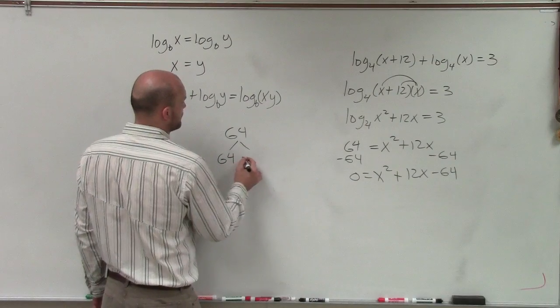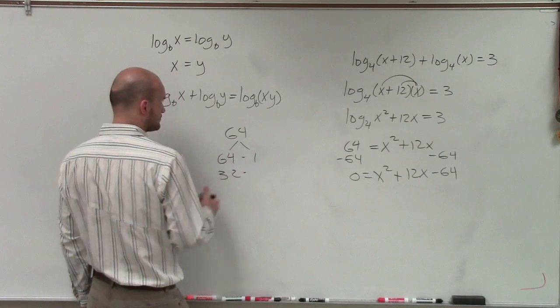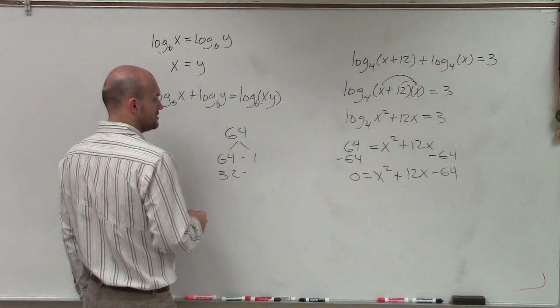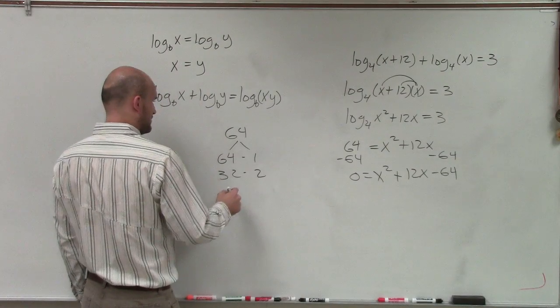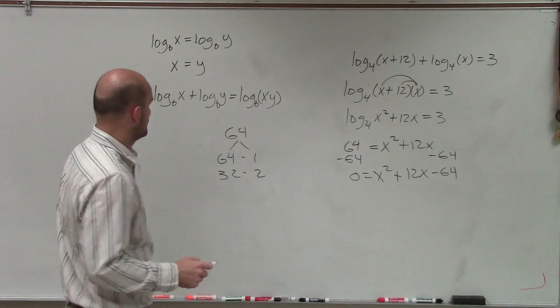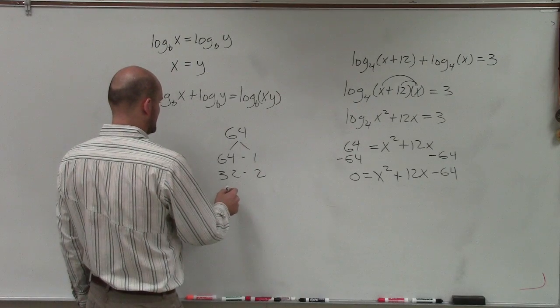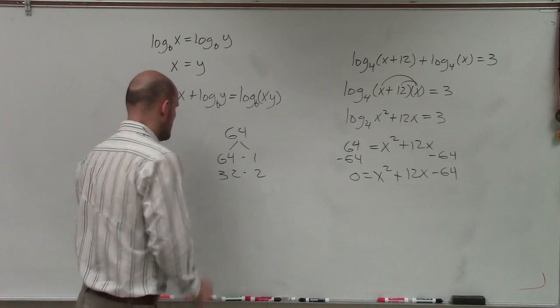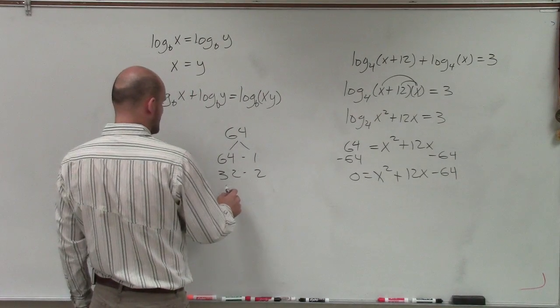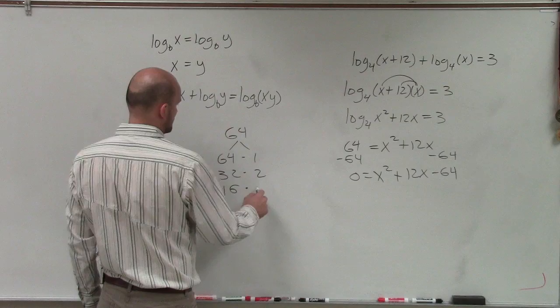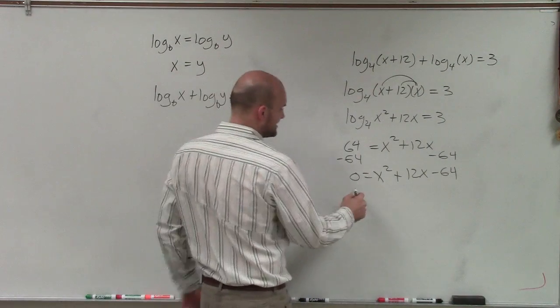64 would be 64 times 1. We have 32 times 2, and 16 times 4. Let's see, 3 doesn't go into 64 evenly. We could do 16 times 4, and you notice that 16 times 4 is going to give us our answer.